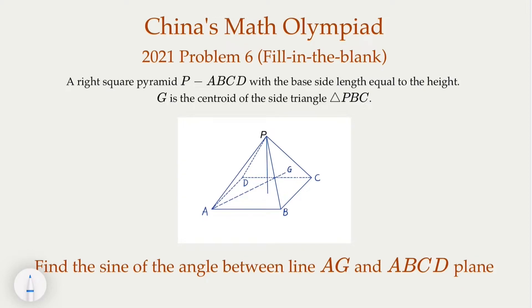This is from China's Math Olympiad 2021, Problem 6. It's a fill-in-the-blank problem where we're given a right square pyramid. The base ABCD is a square, and the right pyramid means if you project point P onto the plane, it's going to be the center of ABCD. We're given that the base length equals the height, and G is the centroid of the side triangle. We try to find the sine of the angle between AG and the base plane. Why don't you try to solve this problem, pause the video, and then we'll get the answer.